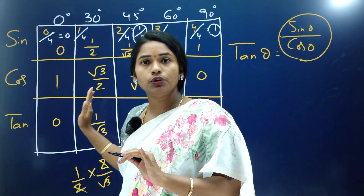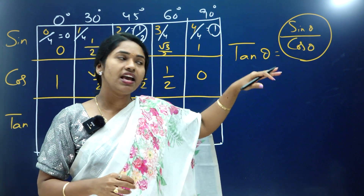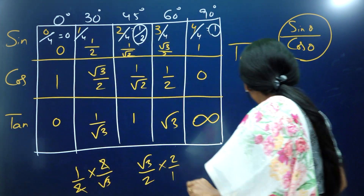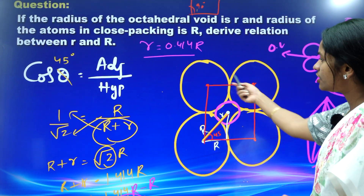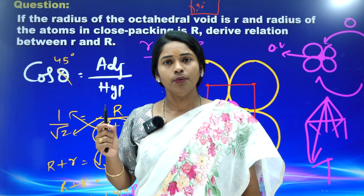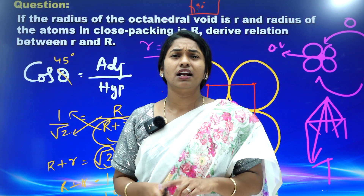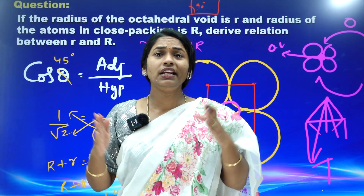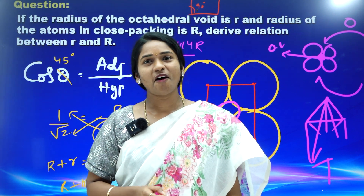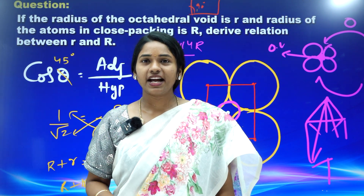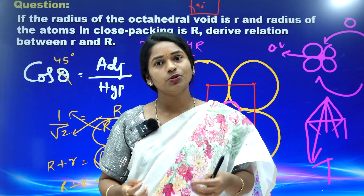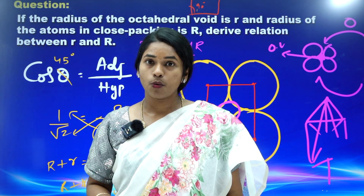Keep this table with you — even as a NEET aspirant, anywhere you see a trigonometric value, you won't feel any discomfort. Now, coming back to the previous result: the octahedral void relation is small r = 0.414 capital R. There are so many videos and tricks on the Komali Ma'am channel — go through all the videos, one or two videos every day topic-wise, and you will definitely improve so much.